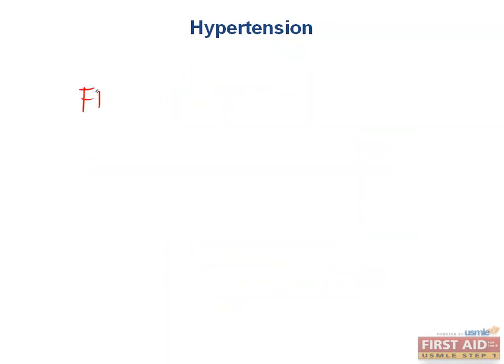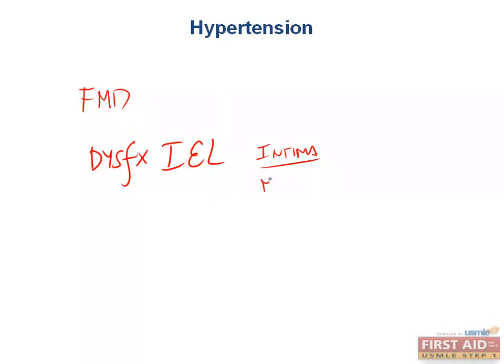Fibromuscular dysplasia is an incredibly high-yield disease because it is one of the unique situations in which you can see hypertension in a really young patient secondary to renal problems. No one knows exactly why this disease occurs, but some publications have concluded that these patients have a dysfunctional internal elastic lamina, which separates the intima and the media.